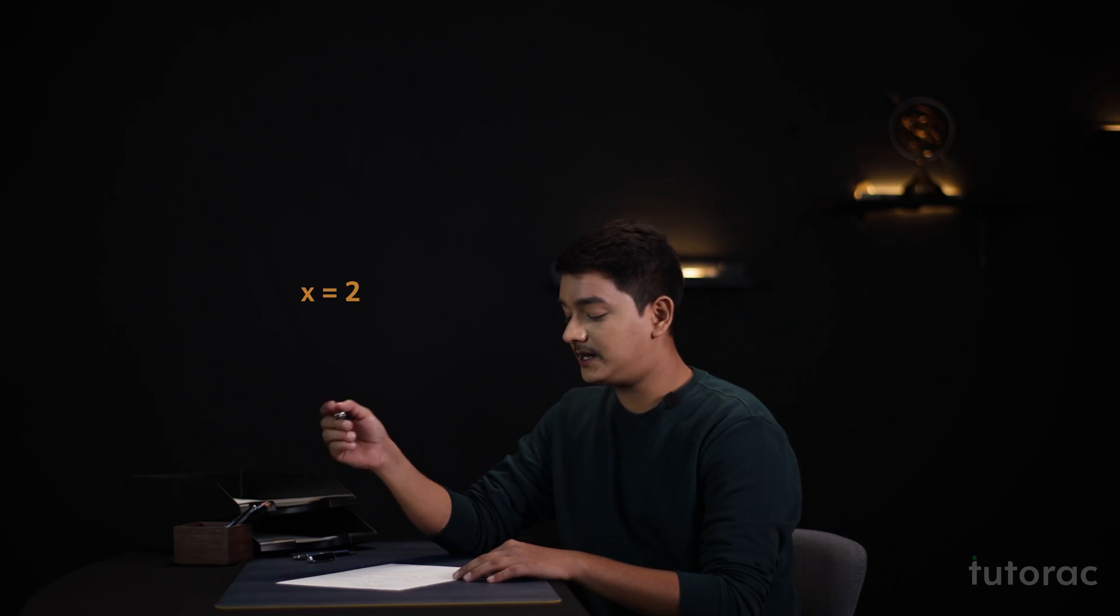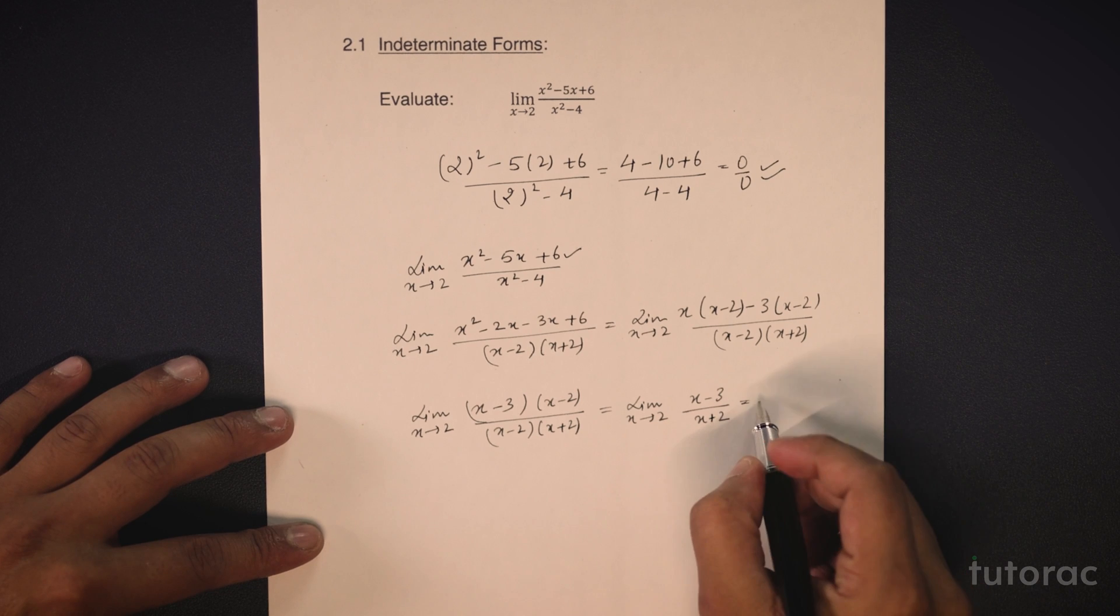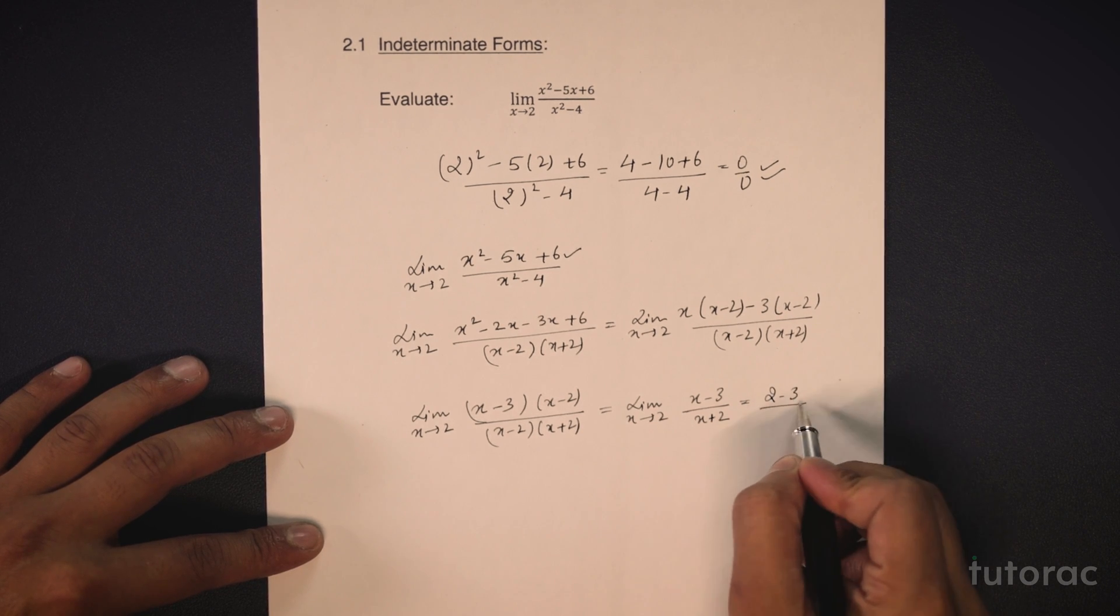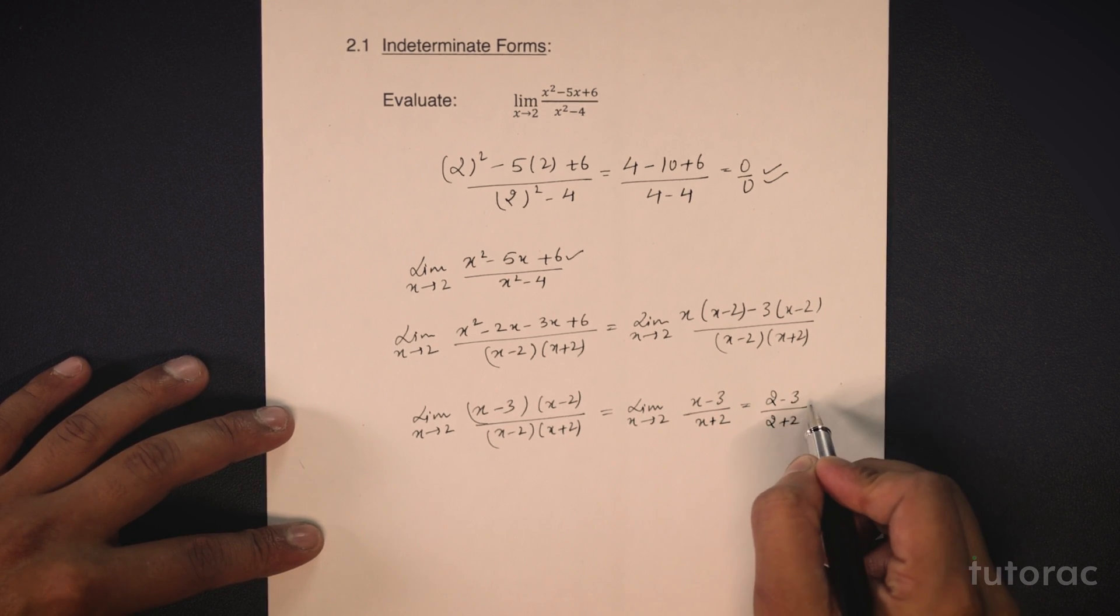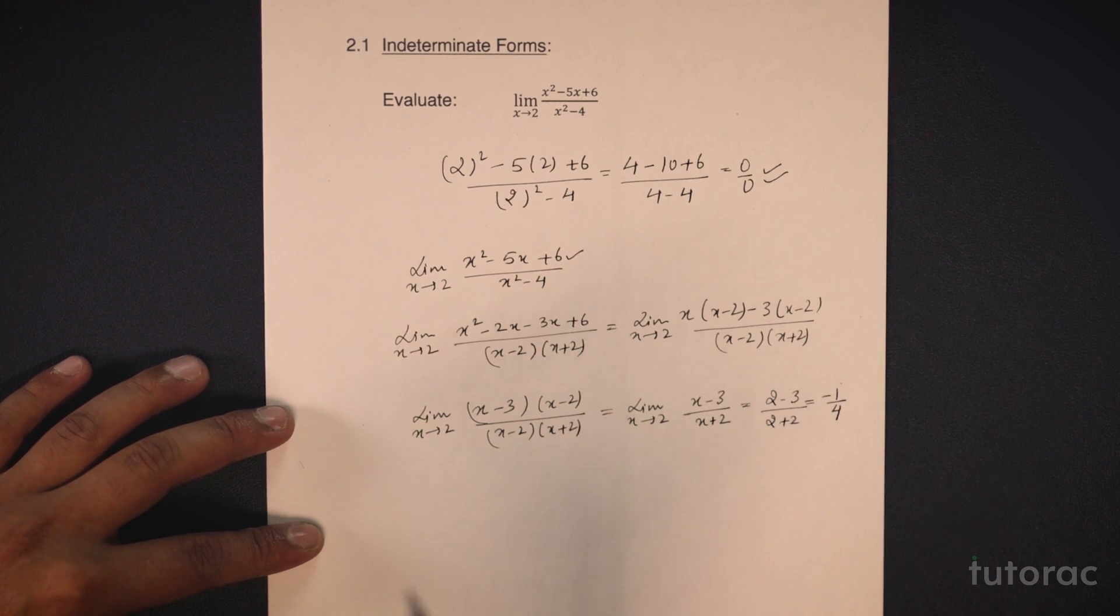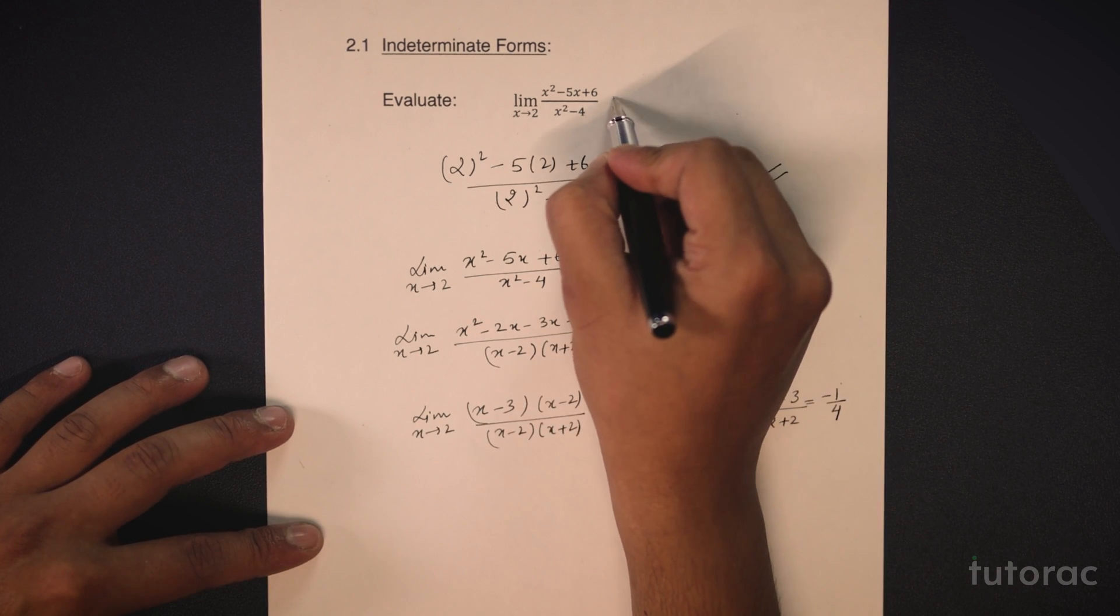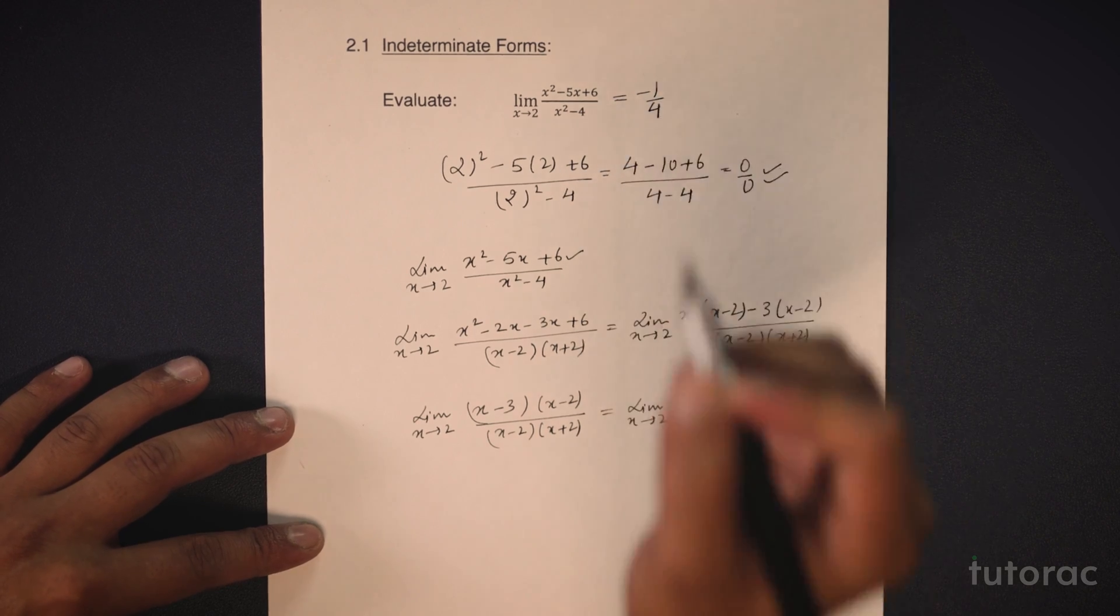If we put the value of x as 2, then we will get 2 minus 3 upon 2 plus 2 which is equal to minus 1 by 4. Hence, the value of this limit is minus 1 by 4.